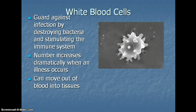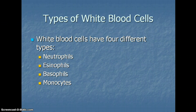The next type of cell we are going to talk about is white blood cells. White blood cells guard against infection by destroying bacteria and stimulating the immune system. The number of white blood cells dramatically increases when an illness occurs. White blood cells can move out of the blood and into tissues to kill bacteria that has not yet made it into the bloodstream. We have four different types of white blood cells: neutrophils, eosinophils, basophils, and monocytes.